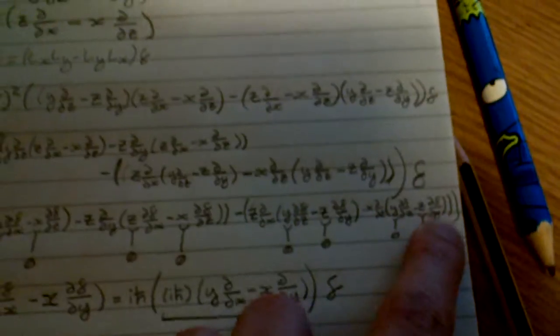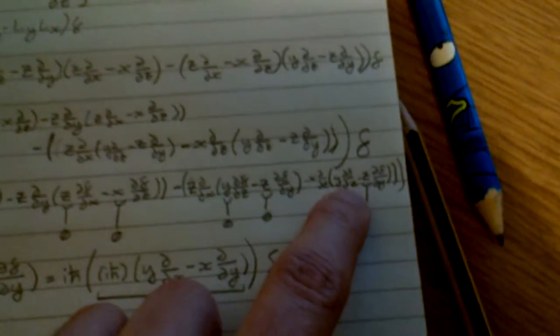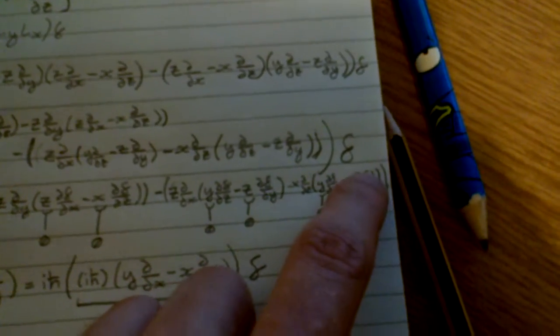Which means you come out with all these terms here with Y times 1 times DF by DX minus minus minus, which just comes out as 1 minus, X times DF by DY.